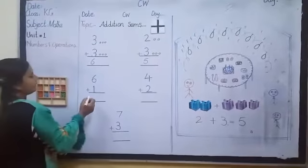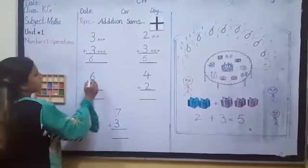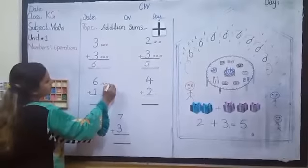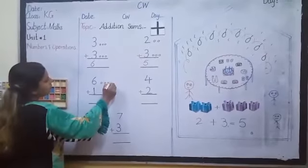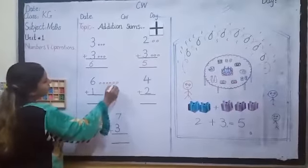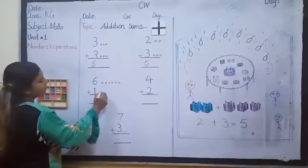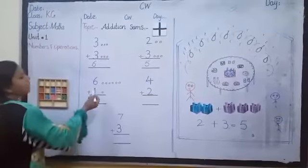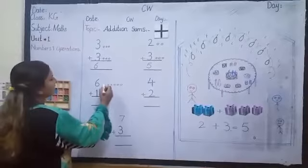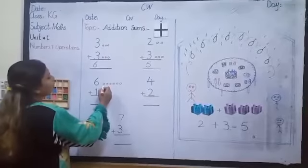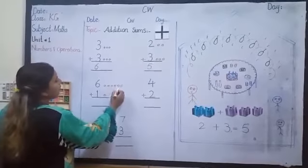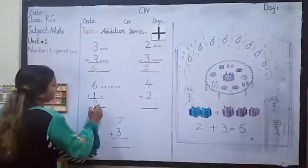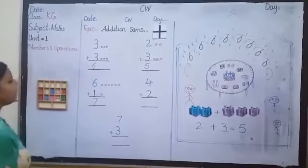Okay, now students look at the next sum. This is number six, so we have to draw six circles here. And this is number one, so we have drawn one circle. Now let's count all of them together: one, two, three, four, five, six, seven. What is the answer? Seven.